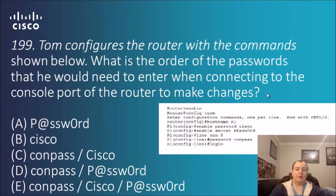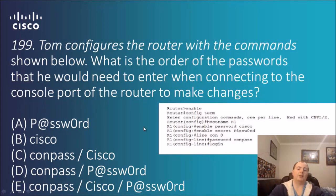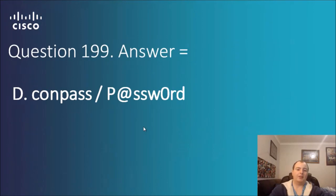Question 199: Tom configures the router with the command shown. What is the order of the passwords he would need when connecting to the console port to make changes? The configuration includes: enable password Cisco, enable secret password, line con zero, password con pass, and login. That login command is the key difference from before. Because login is present, it will authenticate the password. So when connecting via the console port, he'll have to type con pass first and then 'password' to make changes — the answer is D.